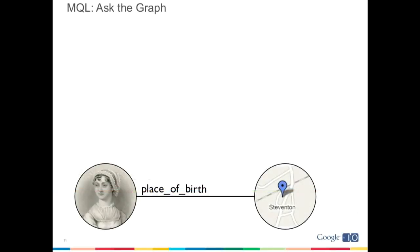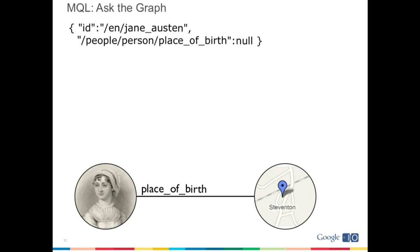Now let's press right into the language. This is MQL, the Metaweb Query Language, where we can ask this graph of entities questions. We'll start with a bunch of really simple queries that demonstrate the different forms queries can take — just looking at the relationship between Jane Austen and her place of birth. The simplest query we could formulate is to start with this object, Jane Austen, then look at this property — id is /people/person/place_of_birth — and say null, meaning we want the system to fill in that last part.